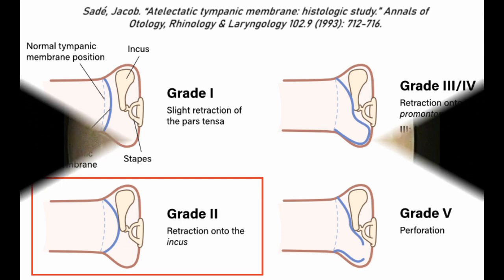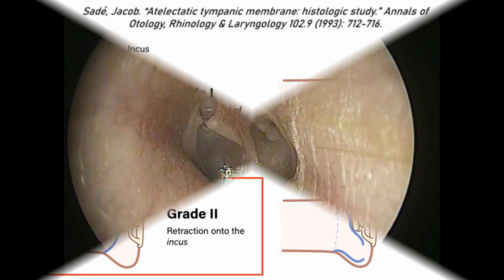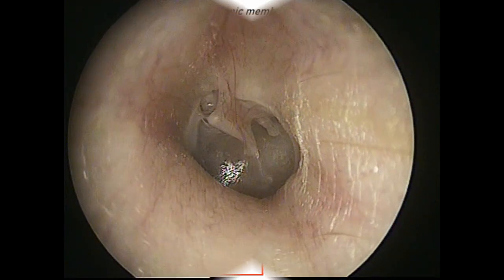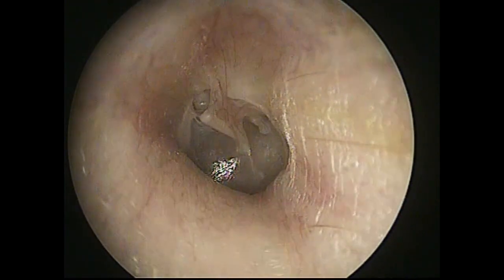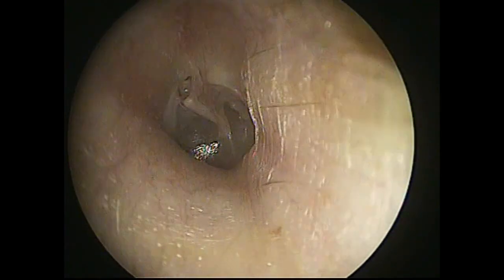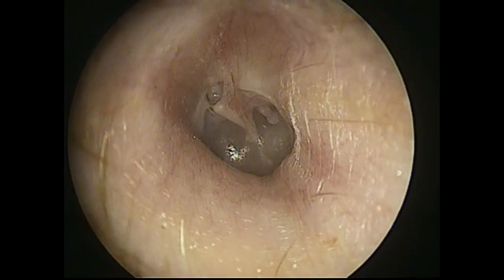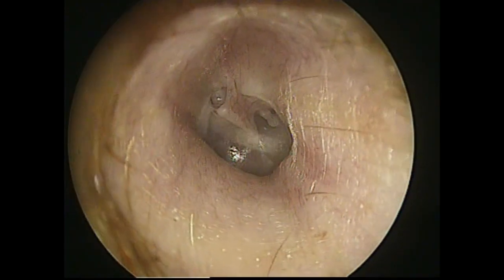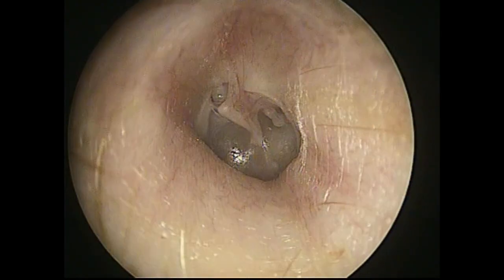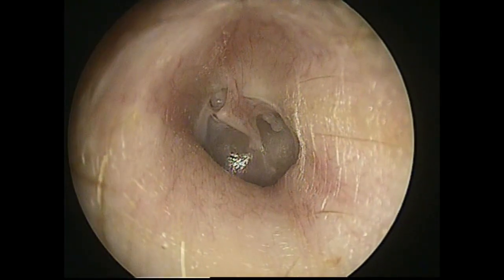Complications include conductive hearing loss, erosion of the ossicles, and cholesteatoma. Tympanic membrane retractions are usually classified after the SAID classification of 1993.